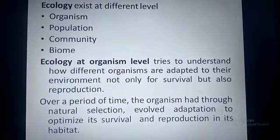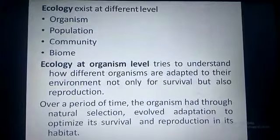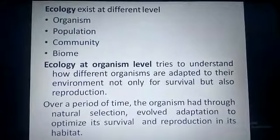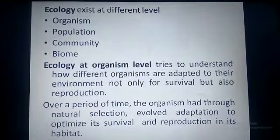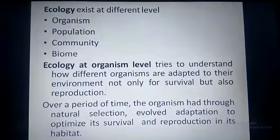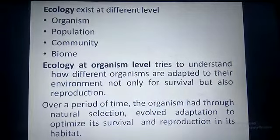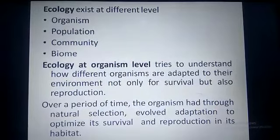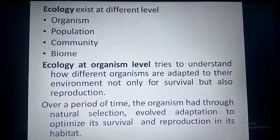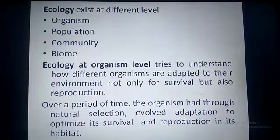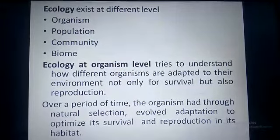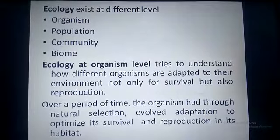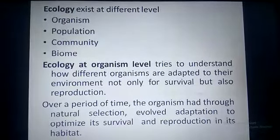Ecology exists at different levels: the organism level, population level, community level, and biome level. At the organism level, it refers to individual organisms. Population refers to a group of similar individuals living in a particular area. Community refers to the group of populations living in a particular area at a given time.